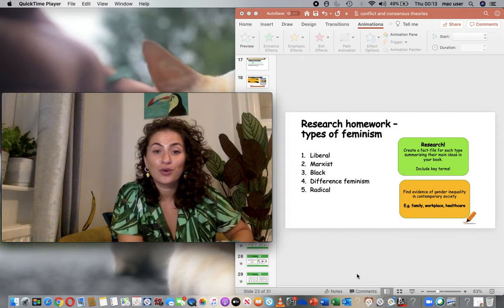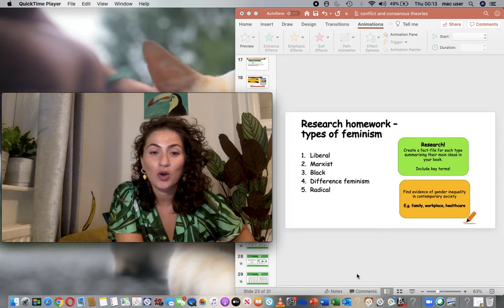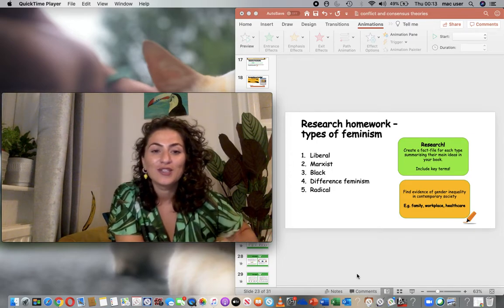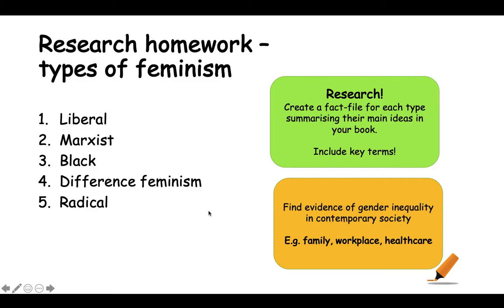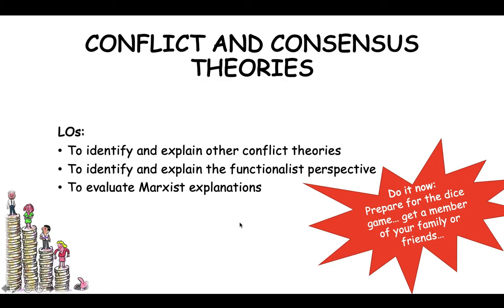I said I will do your research homework with a green pen, and so here it is. You should have done all of these - we've already had a look at conflict theories and consensus theories in terms of functionalists and the Marxist explanations, and we've had a look at Weber and the different types of feminism. Now you are preparing for the dice game, so get a member of your family or friends to play this game with you.